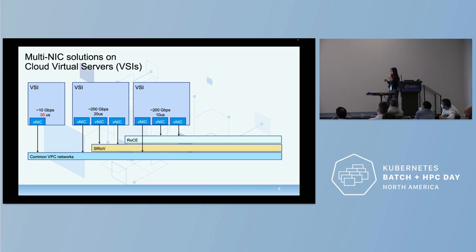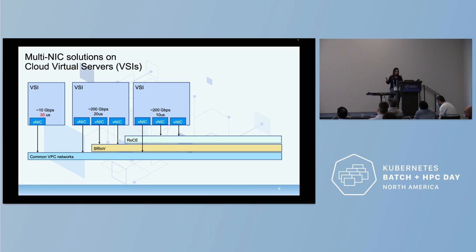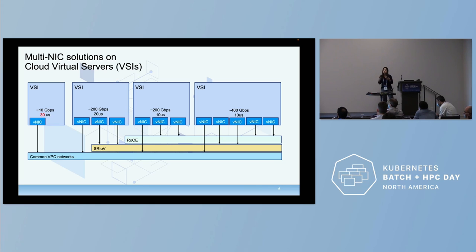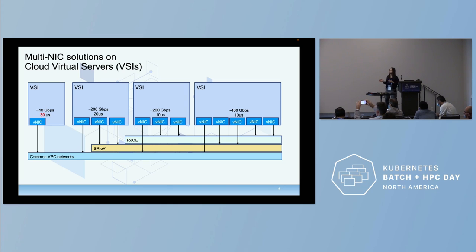In some of our machines we have two of them, and we get about 200 gigabits per second for throughput and 20 microseconds for latency. We also use RDMA technology to reduce latencies further. Some instances have a combination of those technologies together, and finally we get 400 gigabits per second for throughput and 10 microseconds of latency at the virtual server instance level.